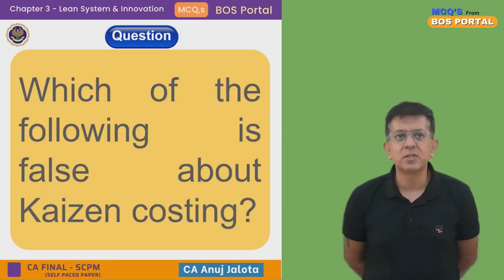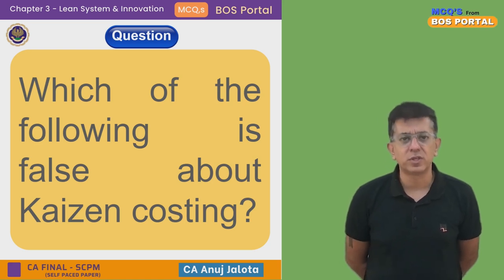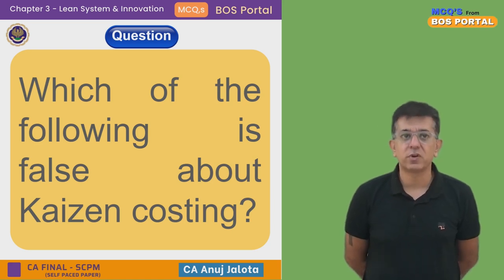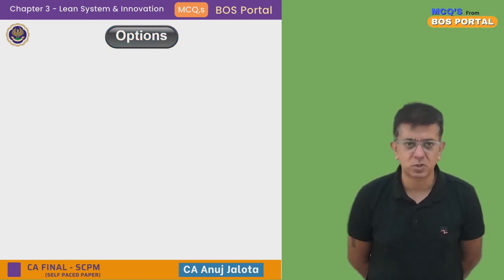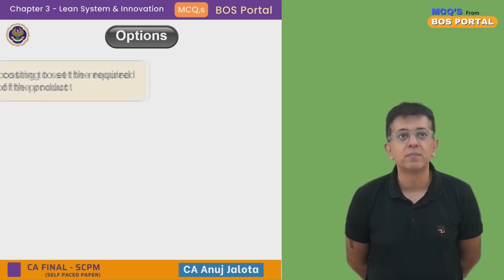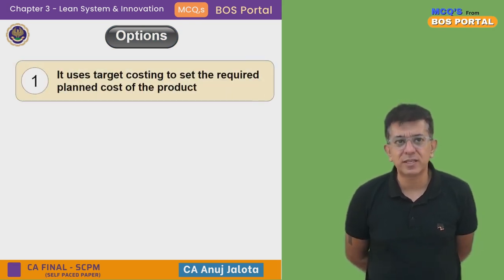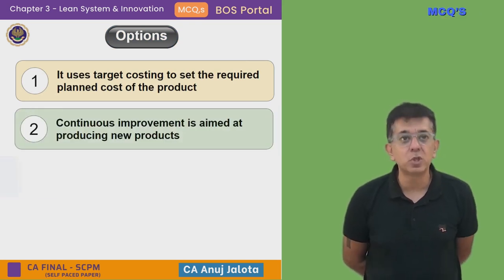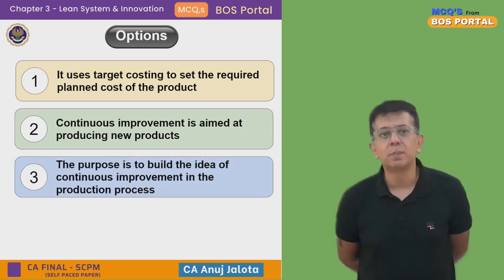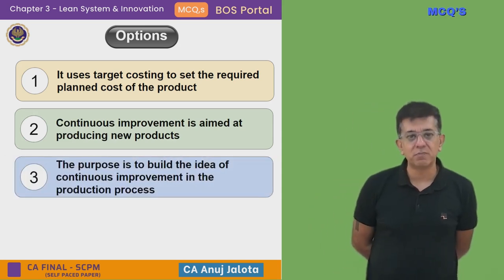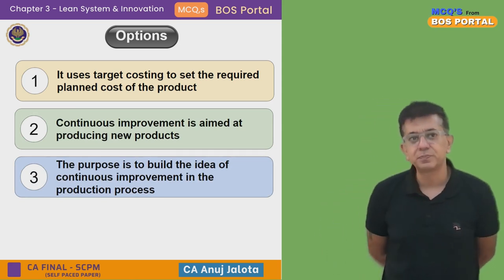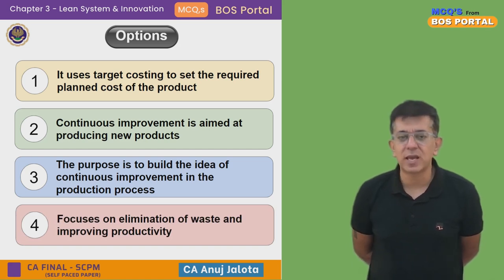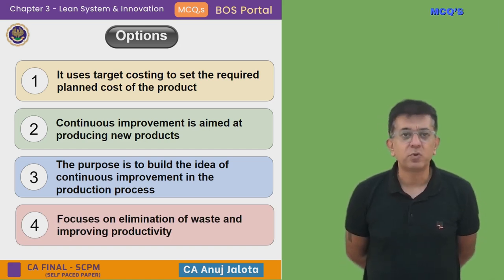This chapter is called Lean Systems and Innovation, divided into many parts, one of which is Kaizen Costing. The question is: which one of the following is FALSE about Kaizen Costing? Option A: it uses target costing to set the required planned cost of the product. Option B: continuous improvement is aimed at producing new products. Option C: the purpose is to build the idea of continuous improvement in the production process. Option D: it focuses on elimination of waste and improving productivity.